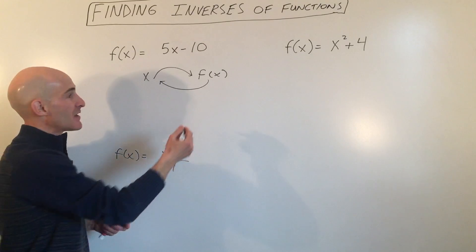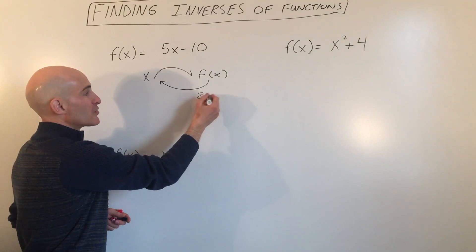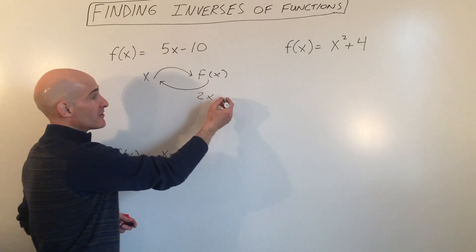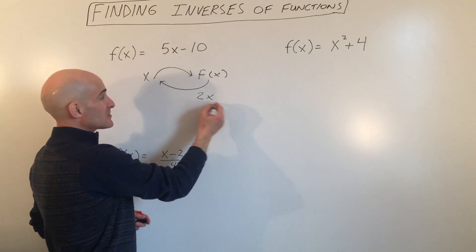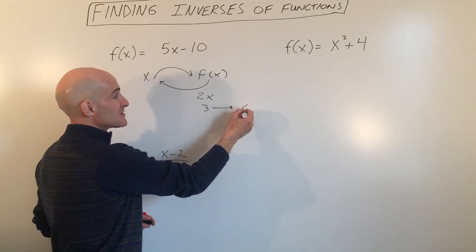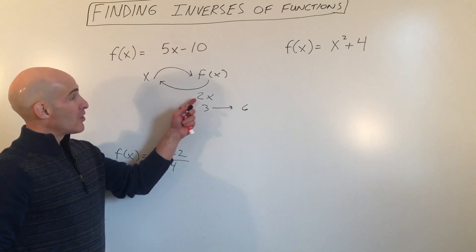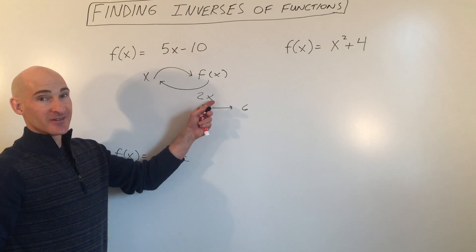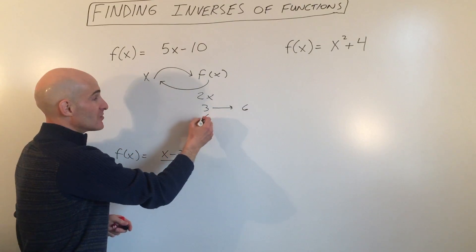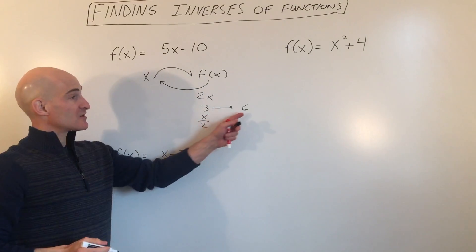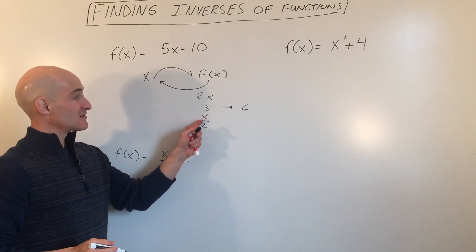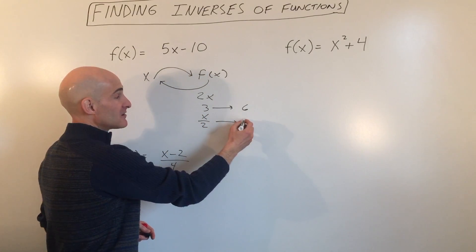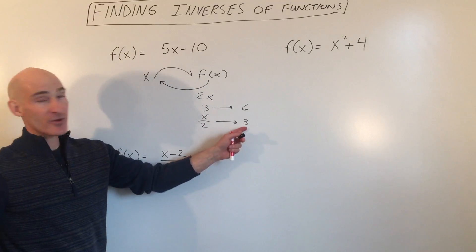I'll just give you a simple example. Say you multiply something by two. So if we put three in here, three is our input, six is our output. What would be the opposite of multiplying by two? Dividing by two. So what you can see here is if you put this output in, six divided by two takes you back to three.